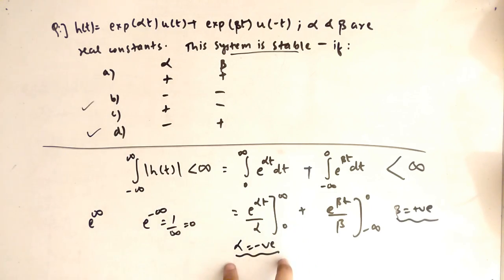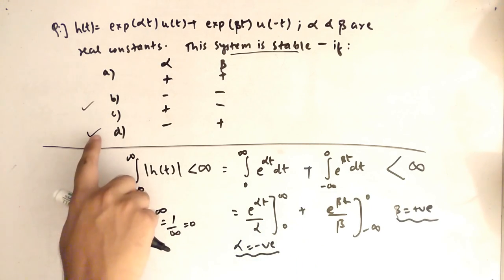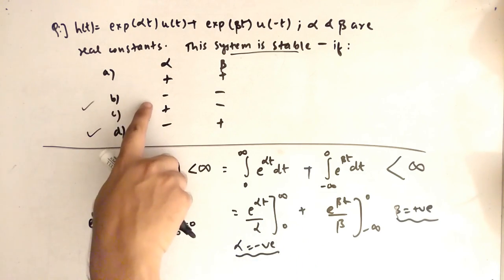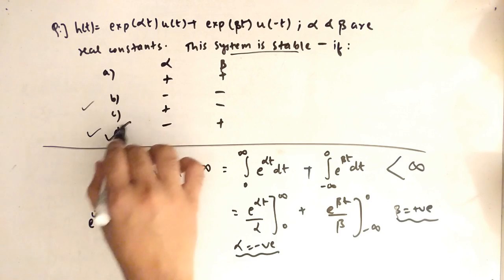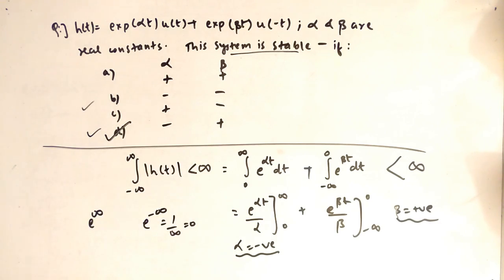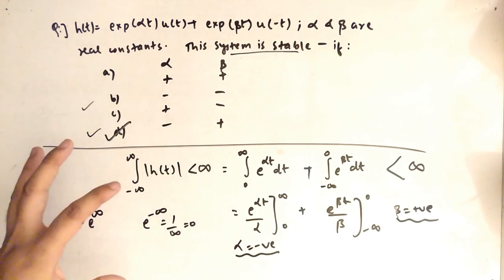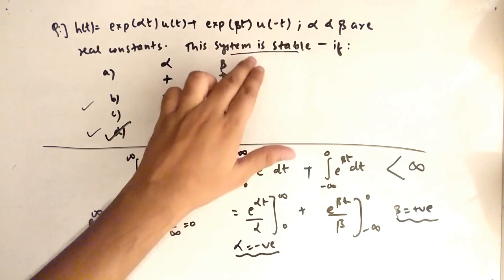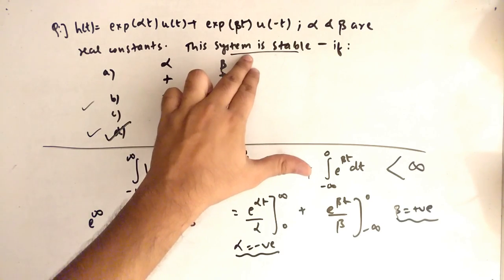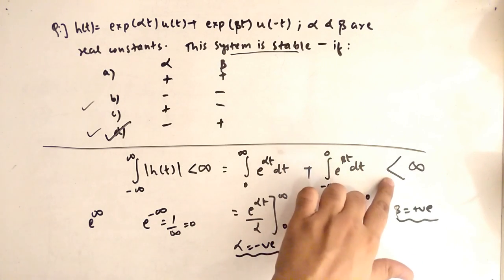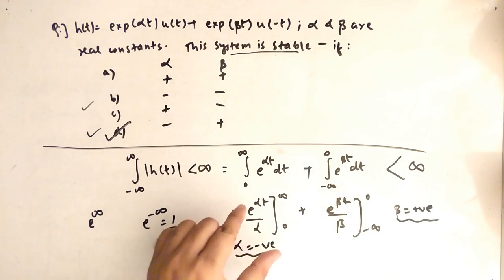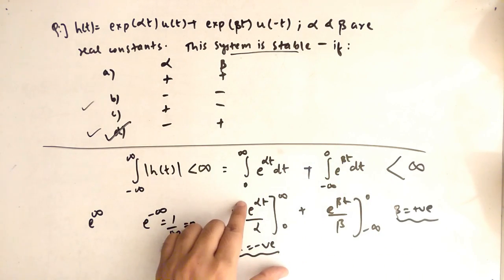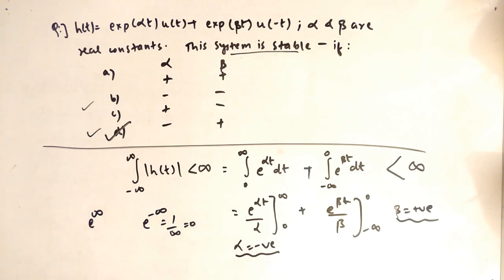Therefore, for the system to be stable, α must be negative and β must be positive — which matches option D. The approach was to apply the stability condition and determine which sign of each constant keeps the integral bounded.